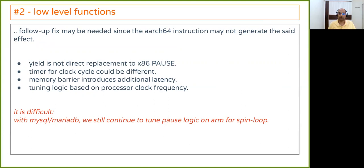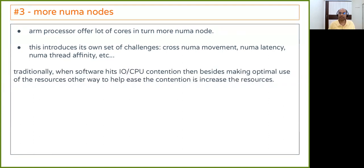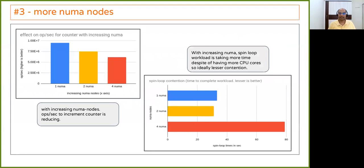The third tip is programming for more NUMA nodes. ARM has many more cores and therefore more NUMA nodes, which brings its own challenges. Cross-NUMA movement should be limited, NUMA latency must be handled, and NUMA thread affinity matters. Traditionally, when we hit contention — whether I/O or CPU — we either resolved the contention or gave more resources. However, as shown in the graph on the left, as we move from one to two to four NUMA nodes, doubling the cores each time, the operations per second consistently decrease.